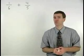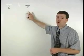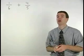To add these two fractions together, one-sixth plus four-fifths, we need a common denominator.